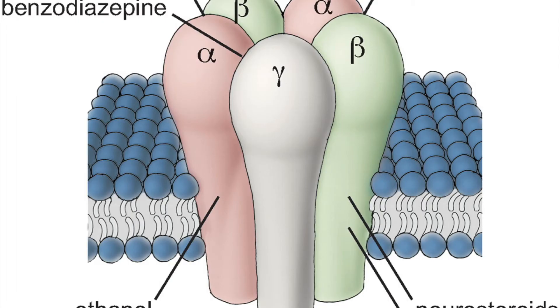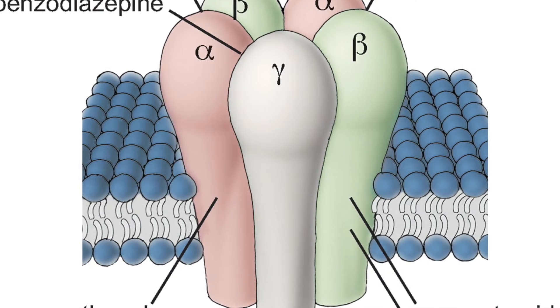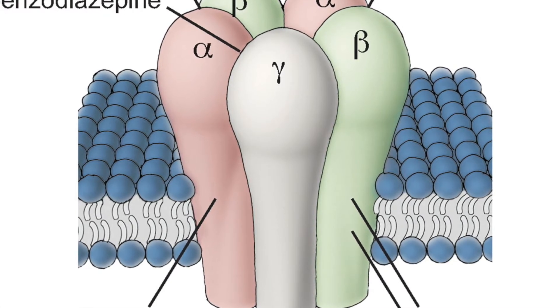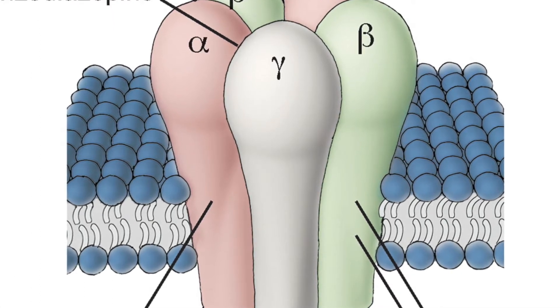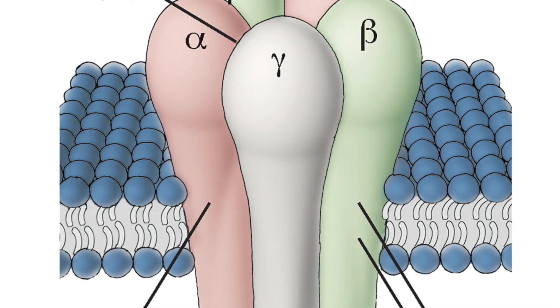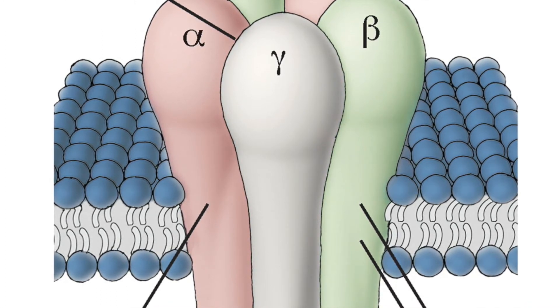The first thing I want to bring up is the GABA-A receptor. Benzodiazepines, along with GABA — which is the main inhibitory neurotransmitter in the central nervous system — bind to this receptor. When we're trying to bring things down or inhibit things, we think about GABA. So GABA is binding there, benzodiazepines are binding there, alcohol functions on this GABA-A receptor, as well as neurosteroids and barbiturates.